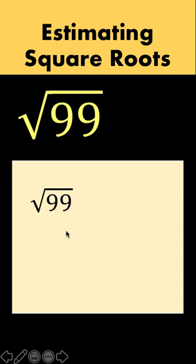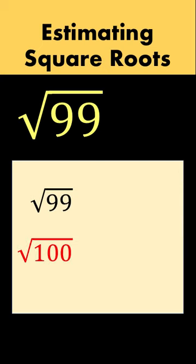So in our case, we are going to use the next perfect square above 99, which is 100. So get the square root of 100 that is equal to 10. And then 99 minus 100 is negative 1.